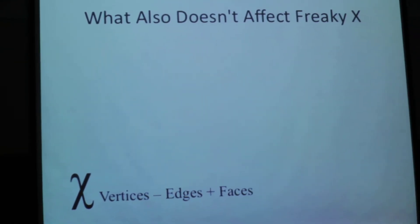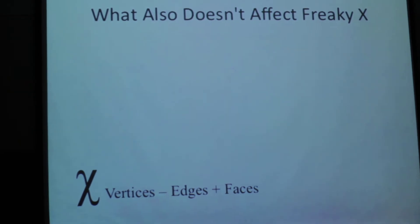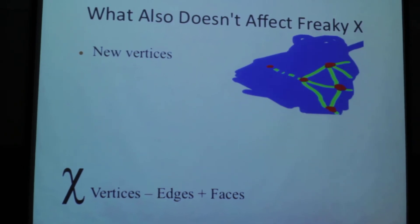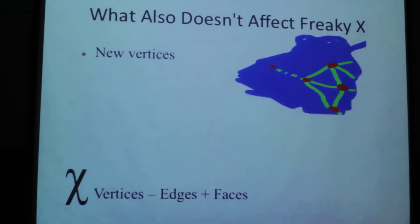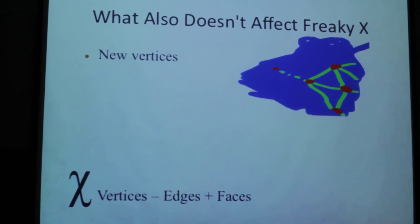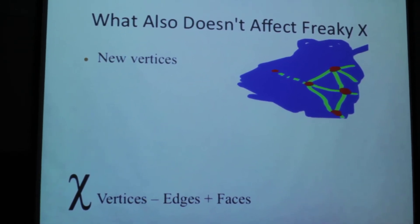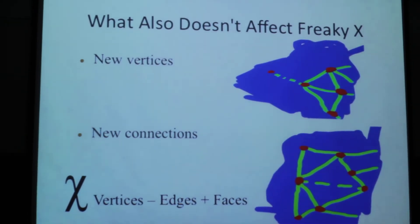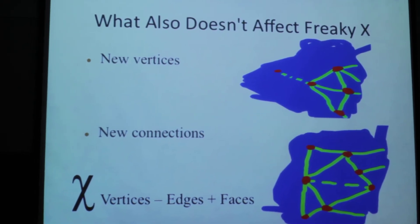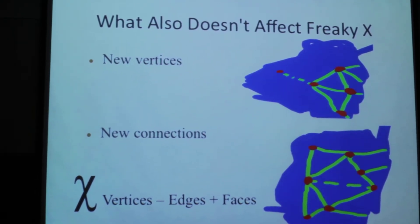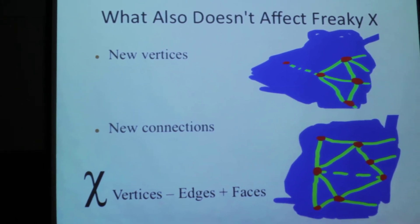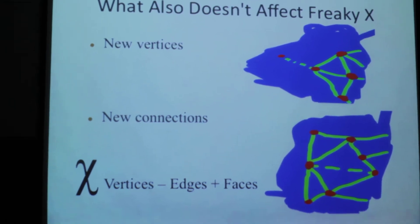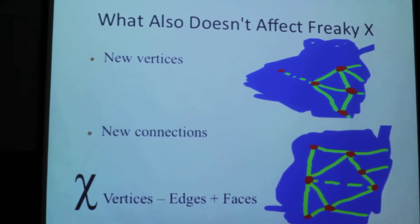Now, there are also some things that don't affect Freaky X, but it's a little more difficult to realize that they don't affect Freaky X. For instance, you can add a new vertex and a new edge connecting it to an old vertex. That increases the number of vertices by one, and it increases the number of edges by one, so Freaky X remains the same. Likewise, if you start with two vertices that aren't connected, you can connect them by adding a new edge between them. This splits that one face in two, and it adds one more edge, so again, Freaky X remains the same. And if you think about it, these are the only two things you can do when you're drawing your graph. So no matter what graph you draw, you'll always calculate the same value.